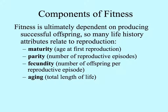Since fitness depends on producing successful offspring, many life traits relate to reproduction: maturity, age at first reproduction; parity, that is the number of reproductive episodes; fecundity, how many offspring per episode or bout — we sometimes call episodes bouts — and what is the total length of the life of the organism.